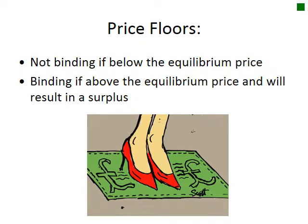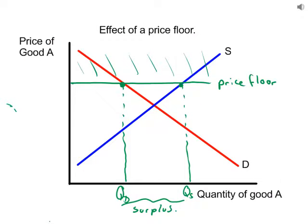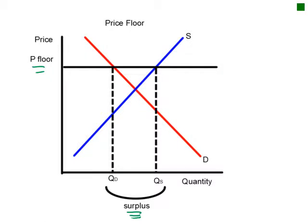Now we'll look at price floors. A price floor is not binding if it's below the equilibrium price; it's binding if above the equilibrium price and will result in a surplus. With a price floor above equilibrium, you can charge more but cannot go below the floor, so you cannot reach equilibrium. Looking at where the floor intersects demand gives us QD, and where it intersects supply gives us QS. Quantity supplied exceeds quantity demanded, so we have a surplus. Here it is drawn — the price floor prevents reaching equilibrium because we can charge more but not less, and there is the surplus.